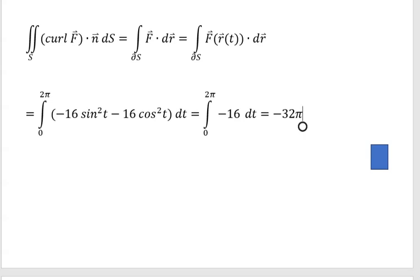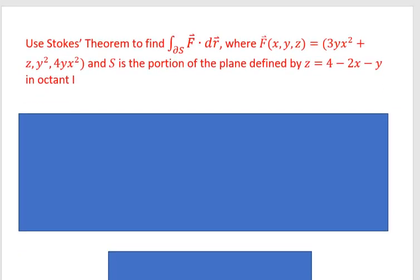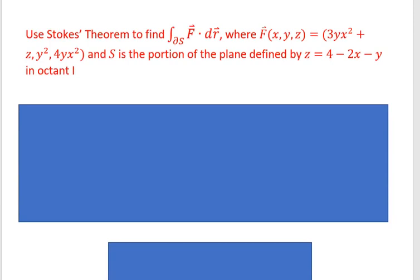So that's our first problem — pretty nice, pretty basic, straightforward. Moving on to the second one: this problem tells us to find the line integral, which means we're actually going to calculate the surface integral. We're going to use Stokes' theorem to find the integral over ∂S of F-hat · dr-hat, where F-hat = ⟨3x²y + z, y², 4x²y⟩, and S is the portion of the plane z = 4 − 2x − y in the first octant. To calculate the surface integral, we first need a parametrization for our surface.